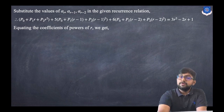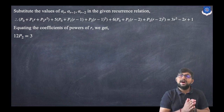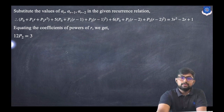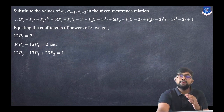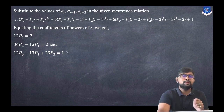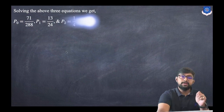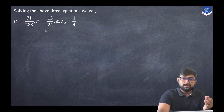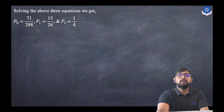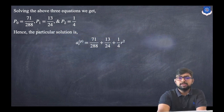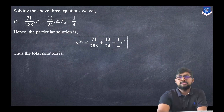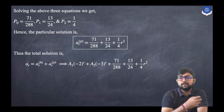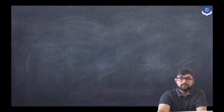Equating coefficients of r²: 12p2 = 3. Equating coefficients of r: 34p2 − 12p1 = 2 (and a third equation for the constant terms). Solving, we get p2 = 1/4, p1 = 13/24, and p0 = 71/288. Hence the particular solution is a(r)_p with those values substituted. The general solution is the sum of the homogeneous and particular solutions. In the next lecture we will discuss the rest of the cases.